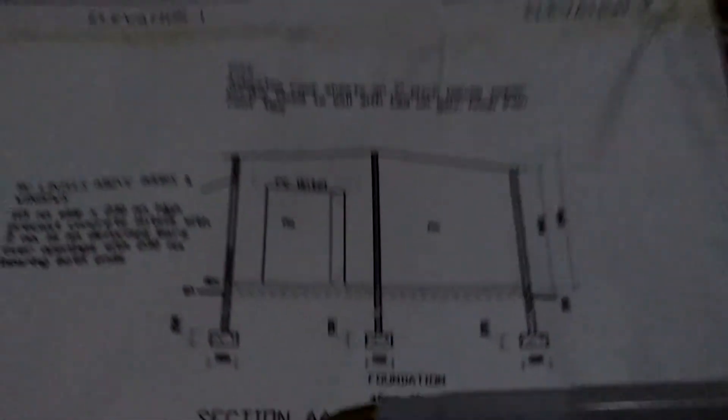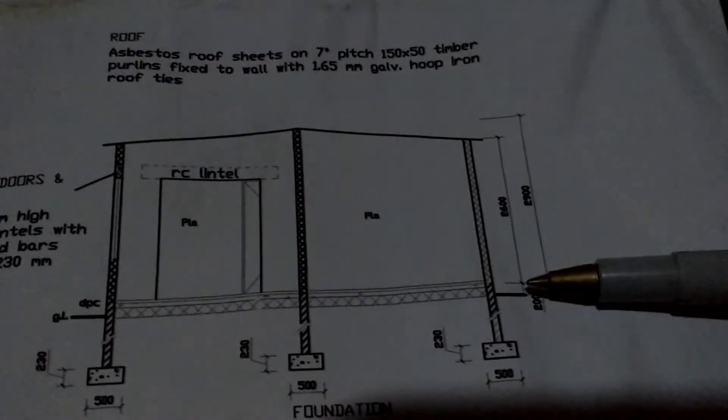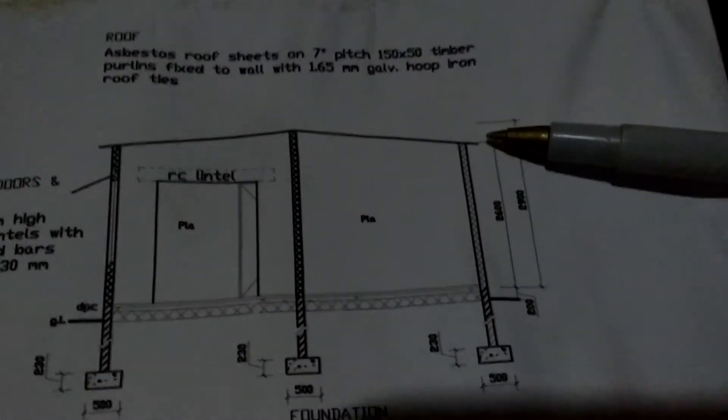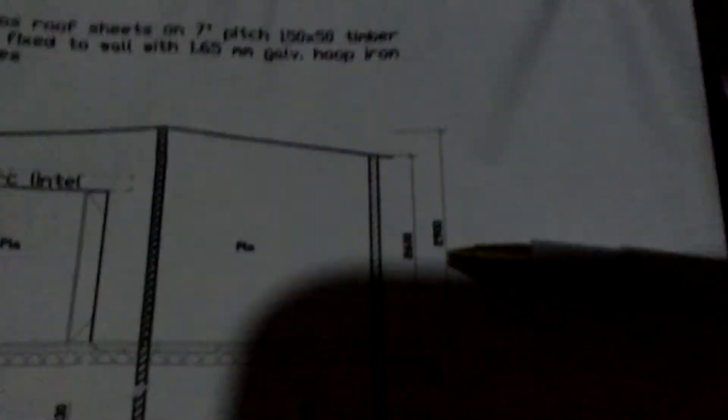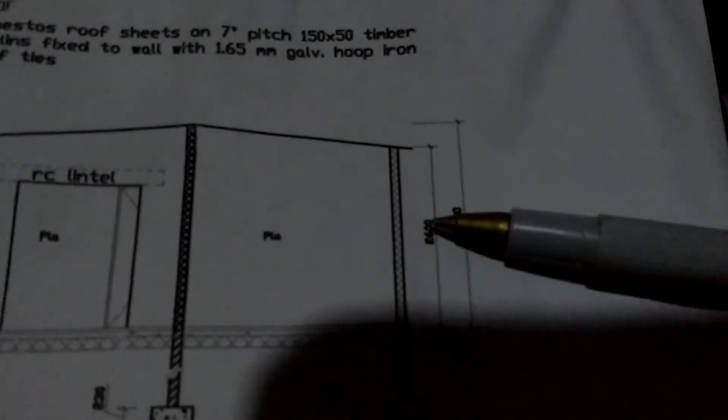So where I'm getting the height, it's here on this section A. So this is our height. We're going to take this short height from DPC up to wall plate height. So that's 2,600. So that's where I'm getting my height.